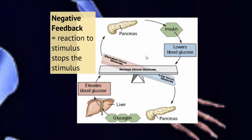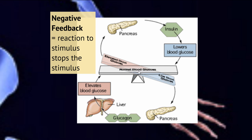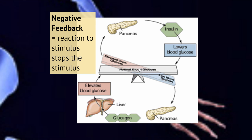Type 2 diabetes is a different situation — you do produce insulin, but your cells don't respond to it anymore. Imagine eating two doughnuts every morning for 25 or 30 years. Your blood glucose is almost always elevated and you're almost always producing insulin. It's like the story of the boy who cried wolf — your cells get tired of listening to insulin and start to ignore it. This can lead to serious health consequences: increased blood pressure, blindness, loss of sensation in limbs, and eventually amputation.